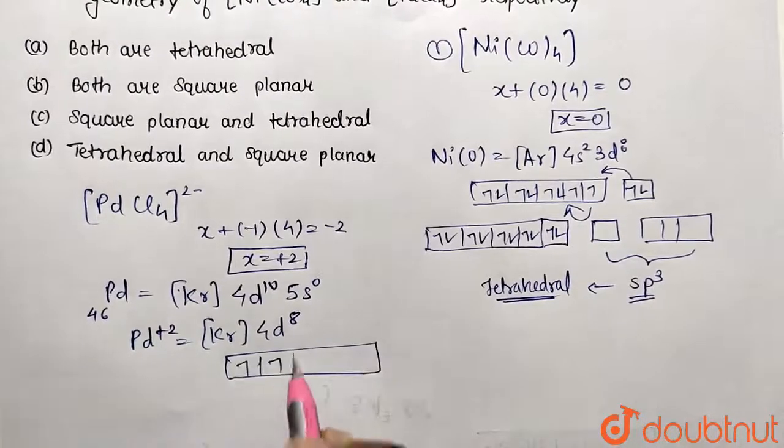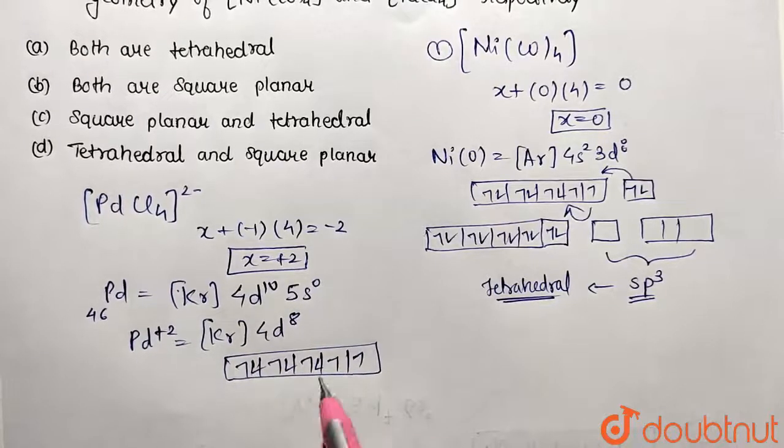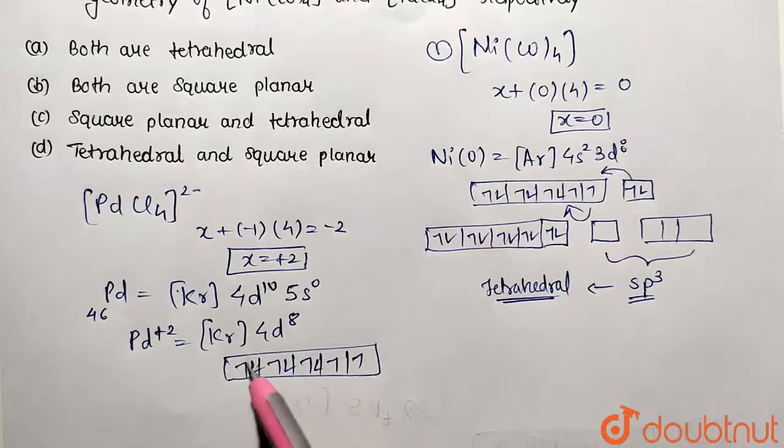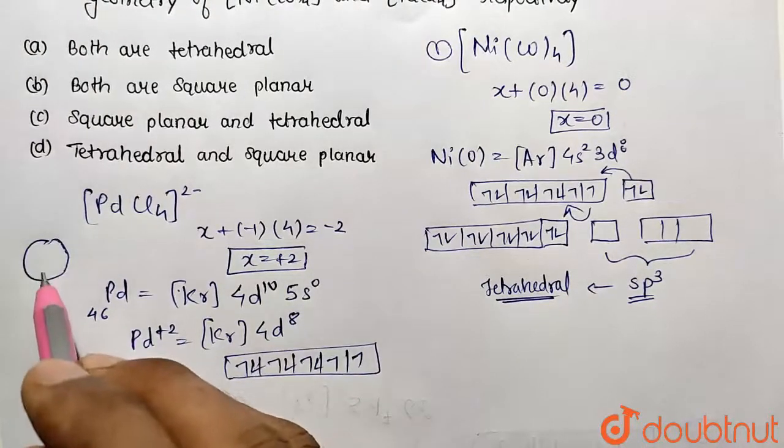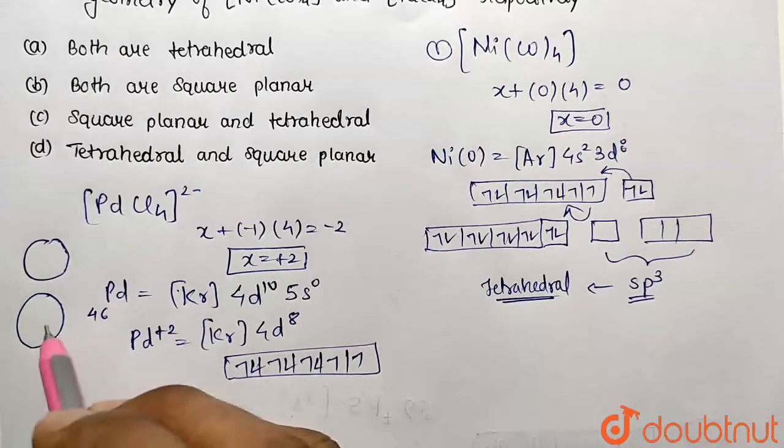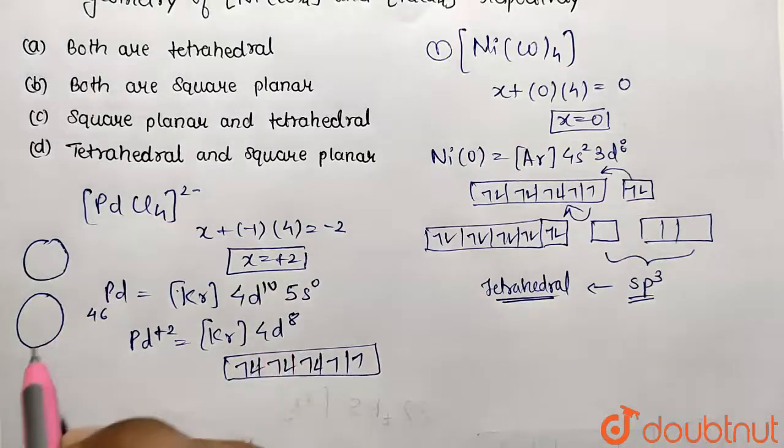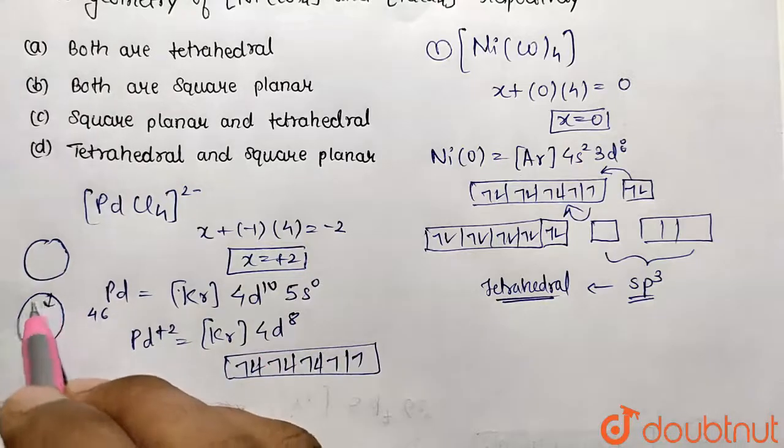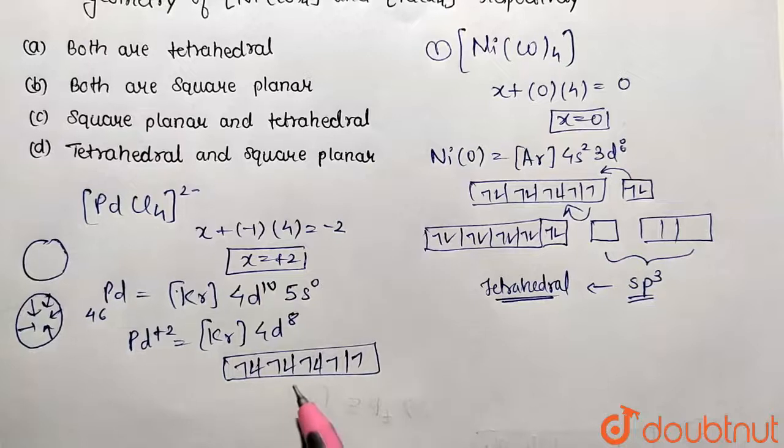Due to the higher effective nuclear charge in palladium compared to nickel, the size is reduced and more electrons are filled. This forms more stable square planar complexes compared to tetrahedral ones.